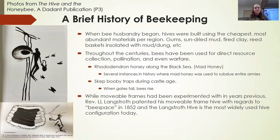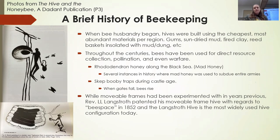When bee husbandry began, hives were built using the cheapest, most abundant materials available — sun-dried mud, fired clay, reed baskets. Today we use a lot of wood, but you can even use reed baskets insulated with dung. Honeybees will live in just about anything as long as you get the dimensions right.